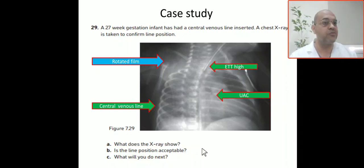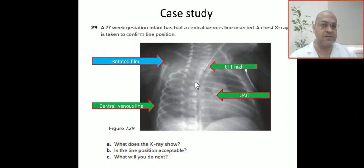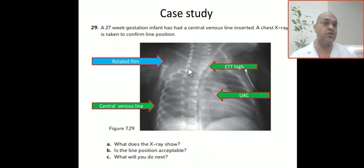First, you have to comment about the X-ray. The film is rotated — the patient is not centralized, and the trachea is asymmetrical and decentralized; you can see it is shifted. Also, the ATT is slightly high.